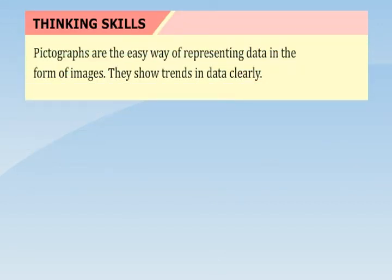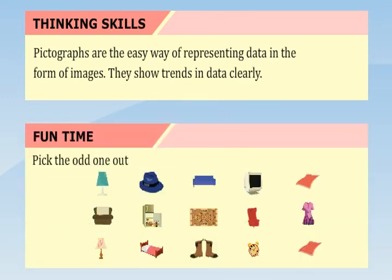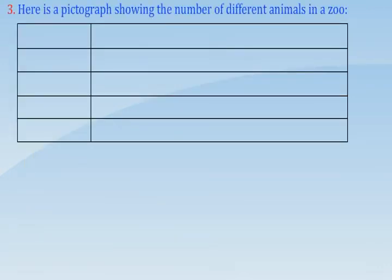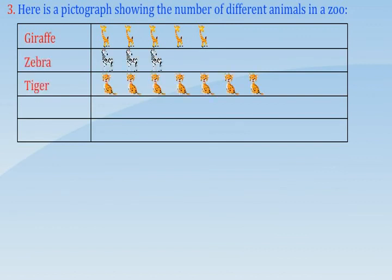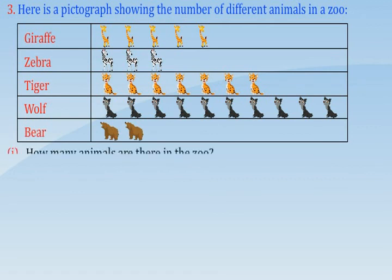Thinking Skills: Pictographs are an easy way of representing data in the form of images. They show trends in the data clearly. Fun time — pick the odd one out. Here is a pictograph showing the number of different animals in a zoo: giraffe, zebra, tiger, wolf, bear. How many animals are there in the zoo?